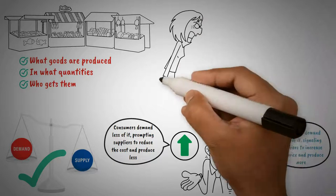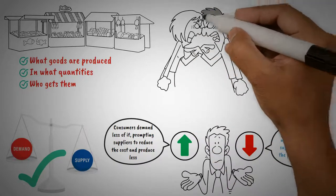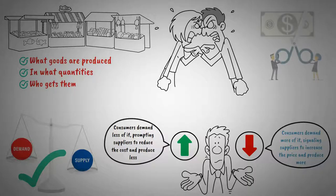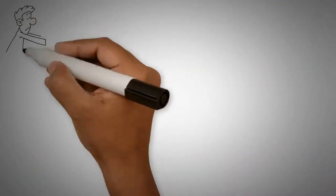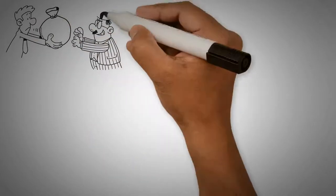However, critics of free markets argue that the price system doesn't always work perfectly. They point out that monopolies, for example, can distort the price system by controlling the market and setting prices above competitive levels. This disrupts the rational allocation of resources since consumers have no alternatives and must accept the monopolist's prices.